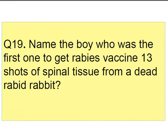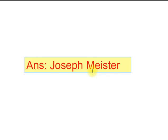Question number nineteen: name the boy who was the first one to get the rabies vaccine, given 13 shots of spinal tissue from a dead rabid rabbit. That boy was Joseph Meister, and the vaccine was prepared and given by father of modern microbiology Louis Pasteur. Joseph Meister was bitten by a rabid dog and Louis Pasteur gave him the vaccine, and Joseph Meister survived.